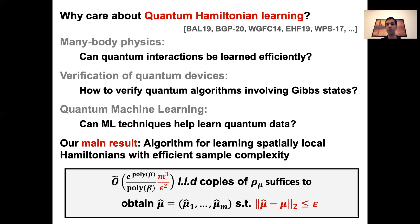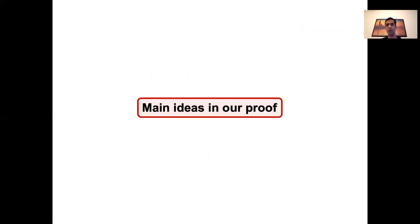So we are assuming the Hamiltonian is spatially local, meaning the interactions act on a constant number of particles that are in the neighborhood of each other. And therefore m, the number of interactions we have is of the order n, the number of particles. All right, but how do we prove this? Our proof has many ingredients, which I now introduce one by one.